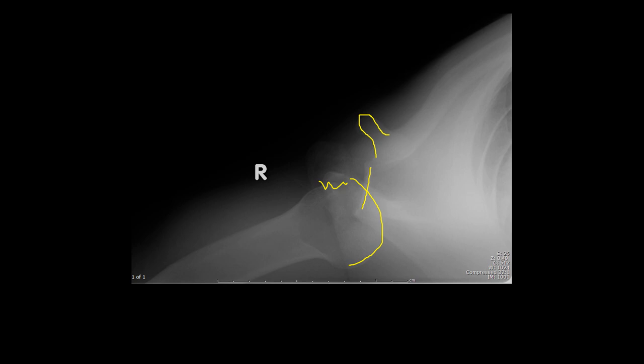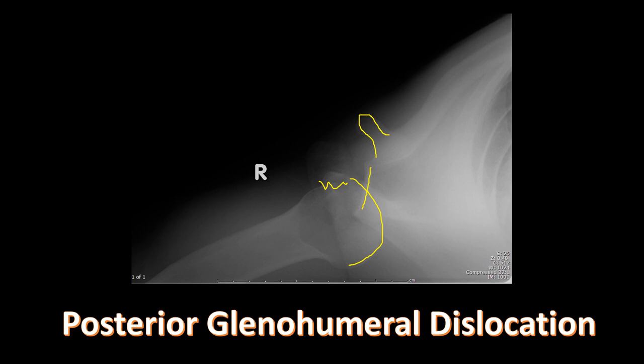Posterior dislocation accounts for only 5% of glenohumeral dislocations, is usually from a direct blow, and is associated with seizures — a classic board question. The trough sign and fixed light bulb appearance are classic findings. When you see this on an AP radiograph, always recommend an axillary view.